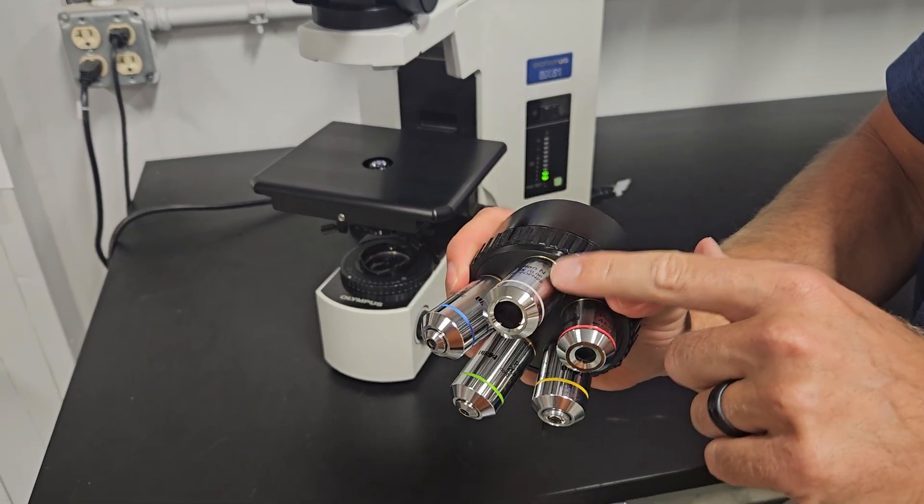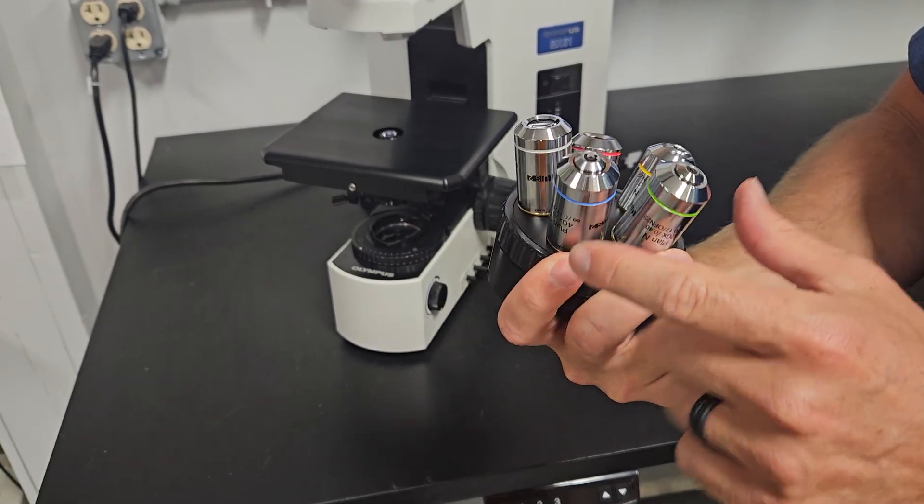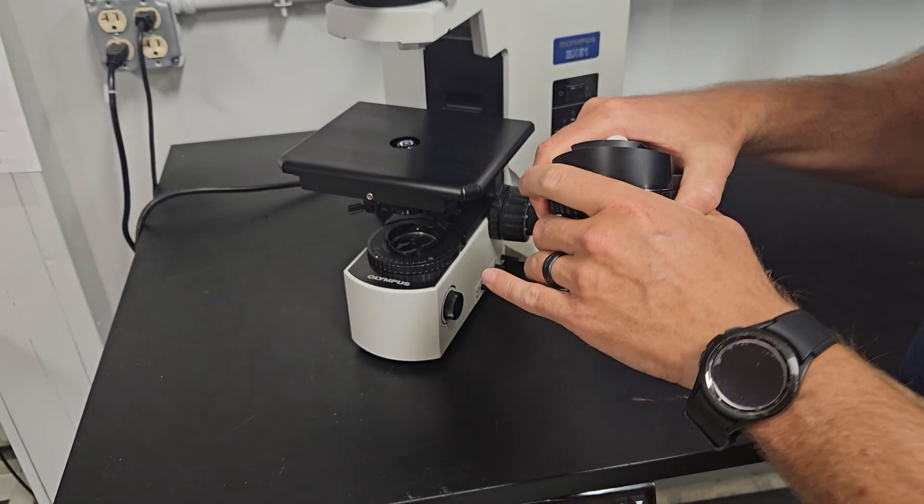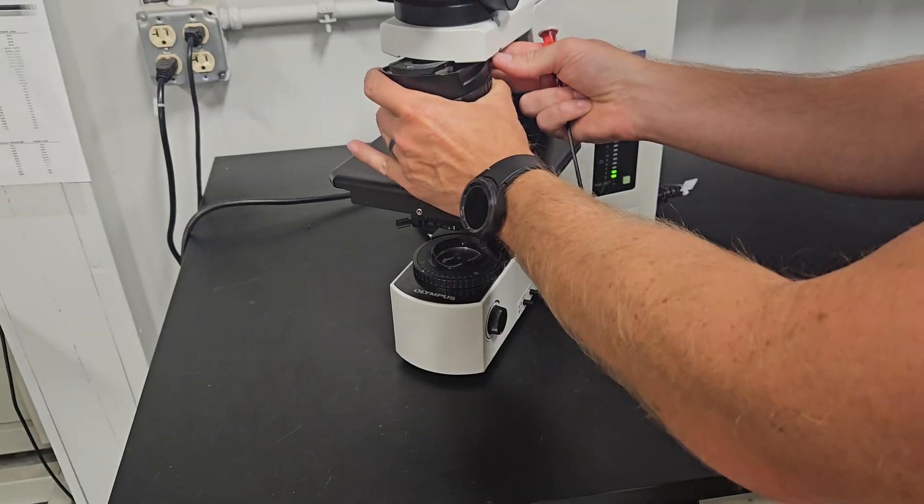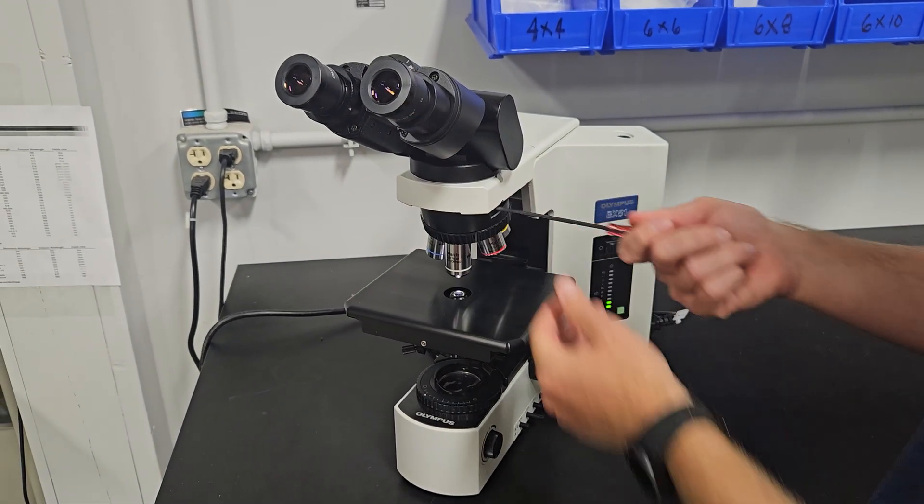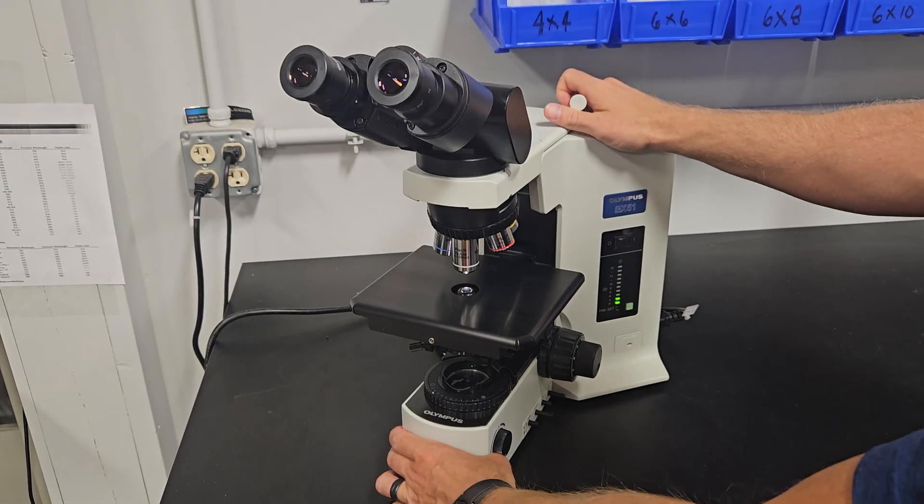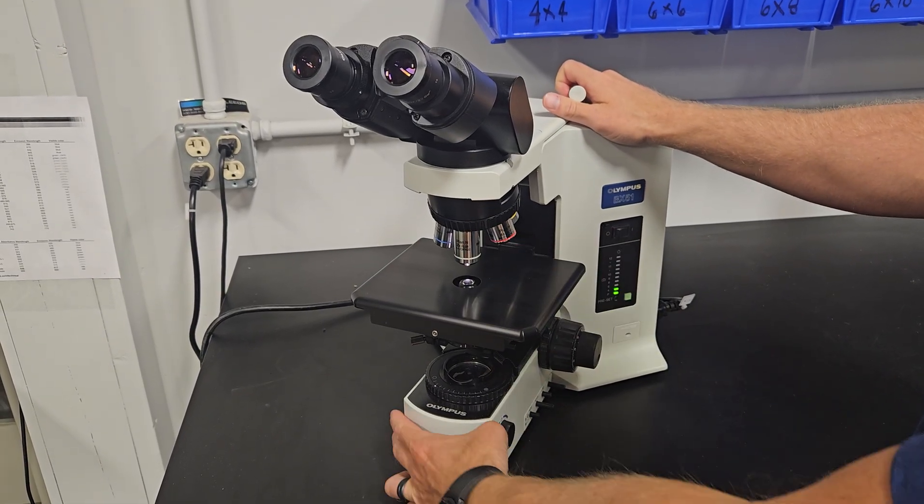Since it's set up for a pathologist, we have a plan 2X, 4X, 10X, 20X, and 40X objective. You might have a six place nose piece on your scope. If you need more objectives, you might have a different objective configuration, but we're just showing you what this particular pathologist wants or Mohs surgeon. 2X is very important to them.